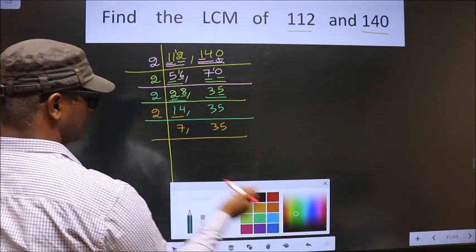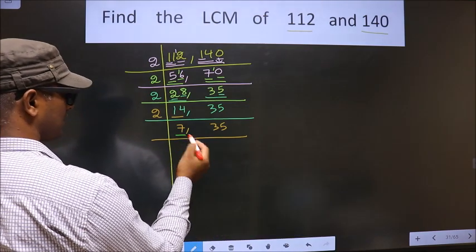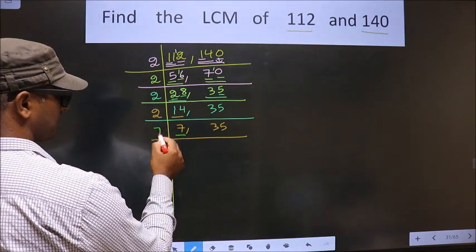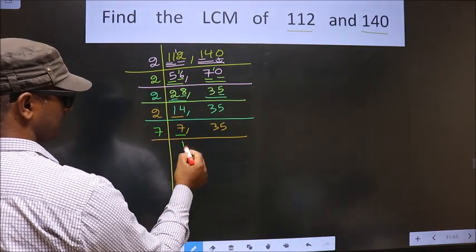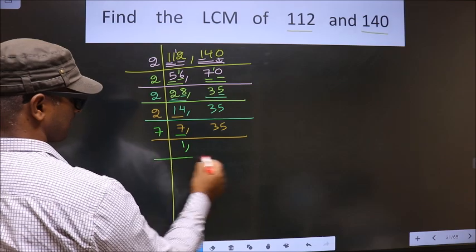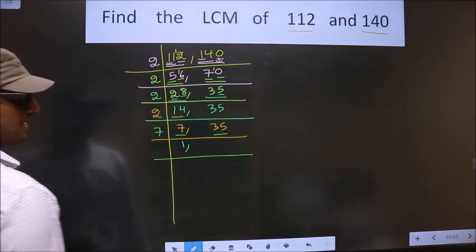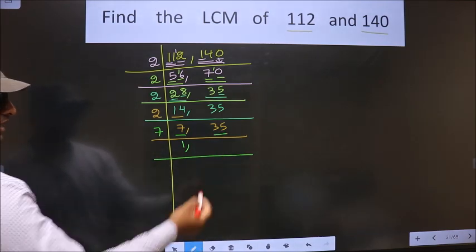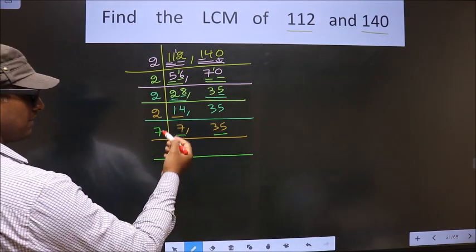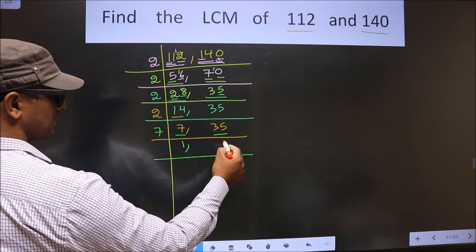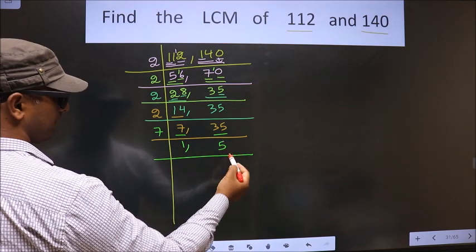Now here we got 7. 7 is a prime number, so we take 7 once: 7 × 1 = 7. The other number is 35. We get 35 in the 7 table at 7 × 5 = 35.